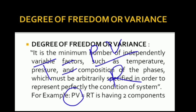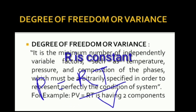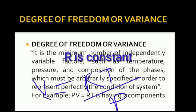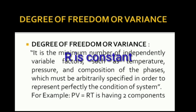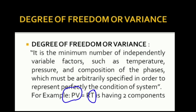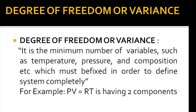But if we know pressure and volume, then temperature can be calculated. Or if we know volume and temperature, we can calculate pressure. If we know pressure and temperature, we can calculate volume because R is a constant. So by knowing any two terms, this equation is completely defined. The minimum number of terms needed to define the equation completely is 2, so the number of degrees of freedom is 2.